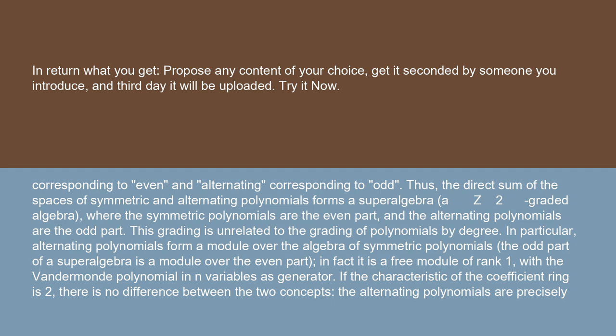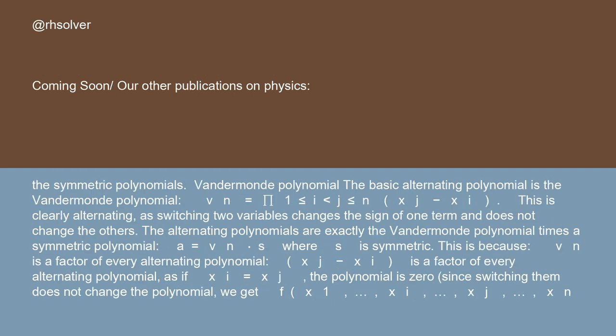If the characteristic of the coefficient ring is 2, there is no difference between the two concepts. The alternating polynomials are precisely the symmetric polynomials.